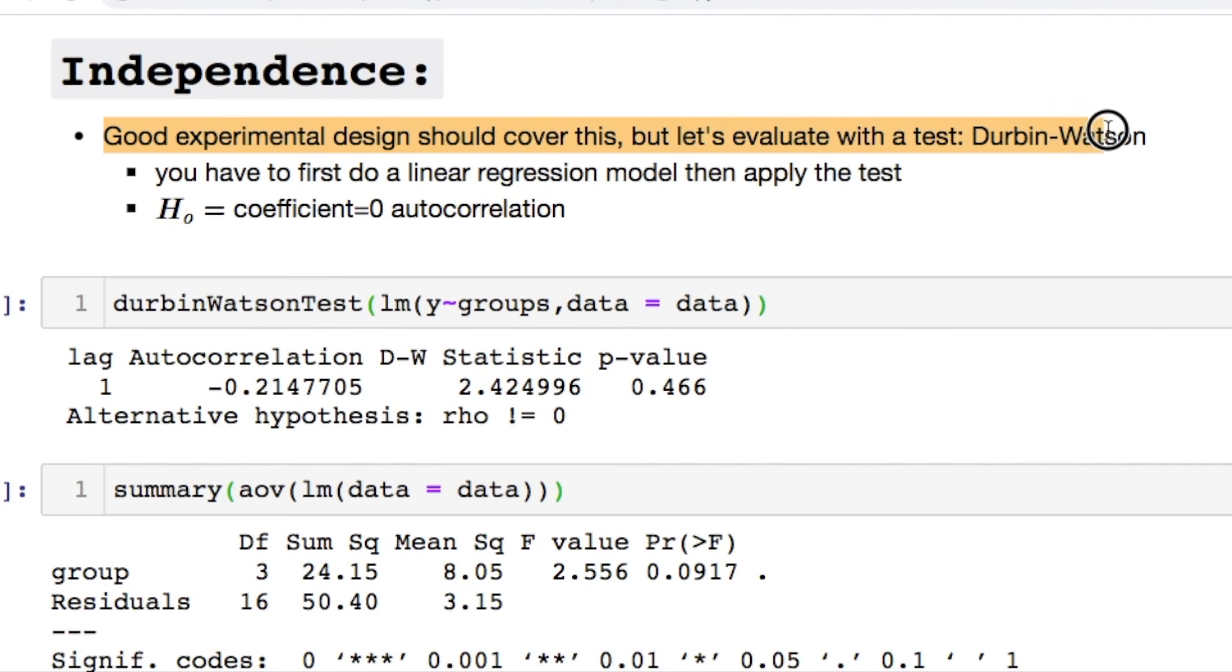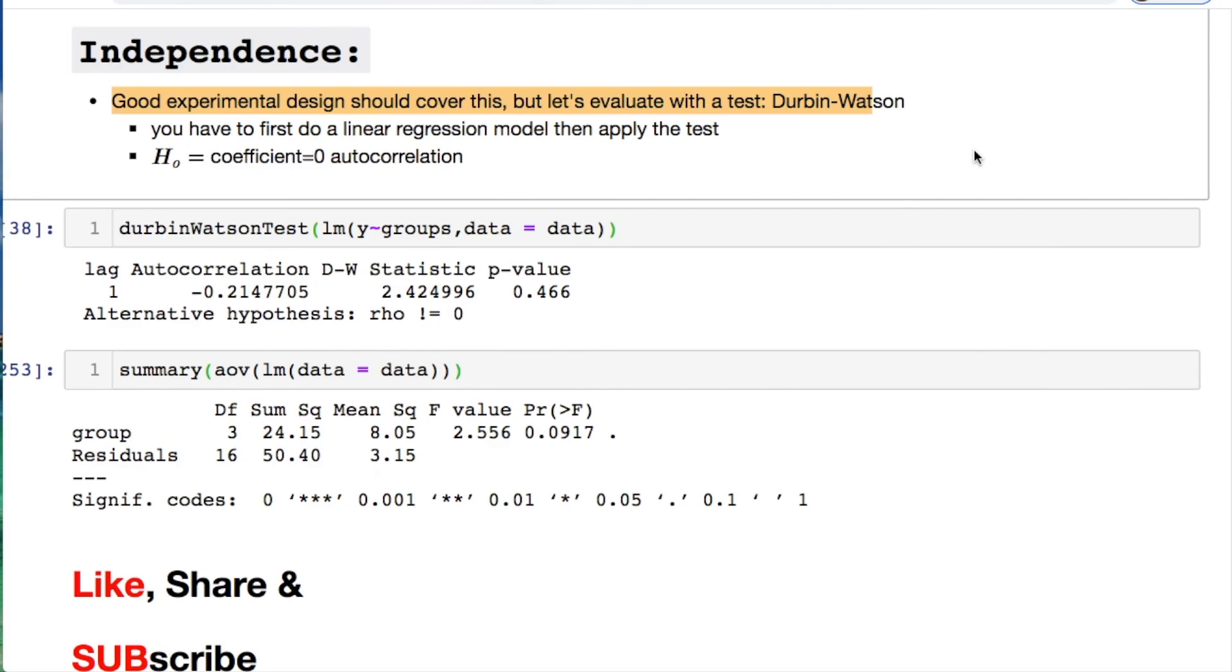We have independence. This is usually taken care of if you're doing a good experimental design. That's going to be left for you in the end. And I'll leave it up so you can kind of read it. Since we didn't do this for our experiment, we didn't set up a good experimental design to avoid any kind of collinearity and things like this to affect our independence. I'm going to use the Durbin-Watson test. Which is saying with the null hypothesis the coefficients equals zero correlation. But you first have to do a linear regression model to apply this test.